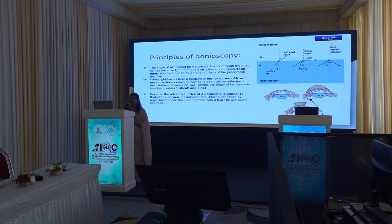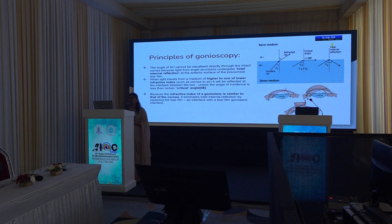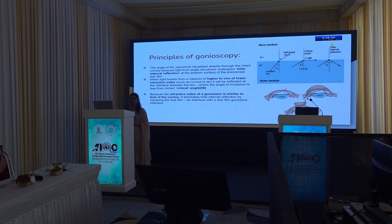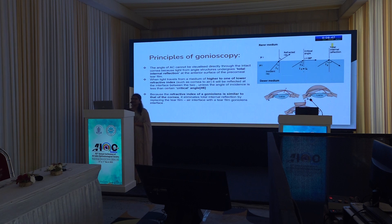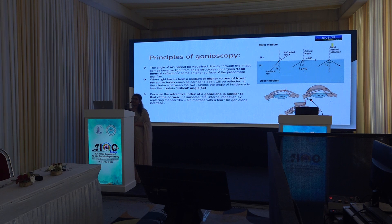This led to the principle of gonioscopy: whenever the incident light exceeds the critical angle, there will be total internal reflection. Whenever it is less than the critical angle, it can refract out perpendicularly. Based on this, whenever a lens with a refractive index equal to that of the cornea — that is 1.37 — is placed in front of the eye, the phenomenon of total internal reflection can be eliminated, which forms the principle of gonioscopy.